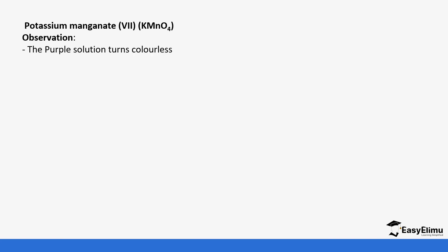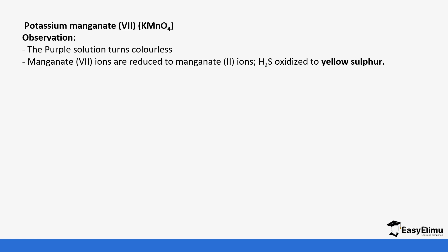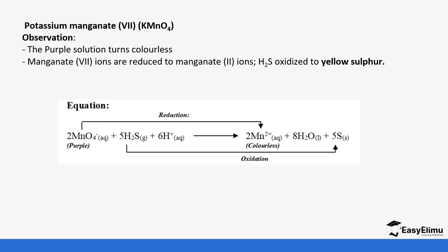Hydrogen sulfide also reduces potassium permanganate(VII), which is purple in color, turning it to a colorless solution. The manganate(VII) ions are reduced to manganate(II) ions, and hydrogen sulfide is oxidized to sulfur which is deposited as a yellow solid. The manganate(VII) ions are the oxidizing agent, and hydrogen sulfide undergoes oxidation, making it the reducing agent.